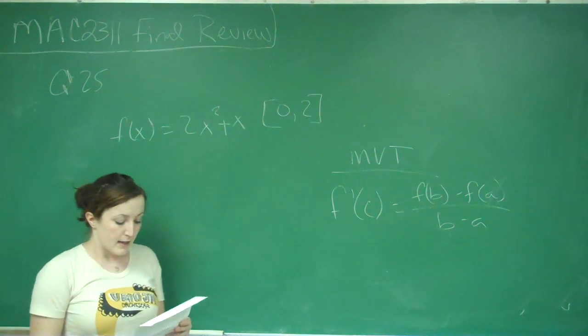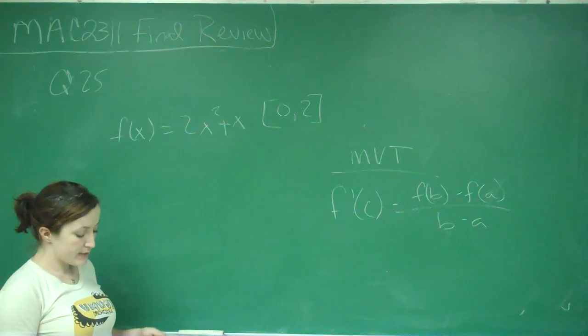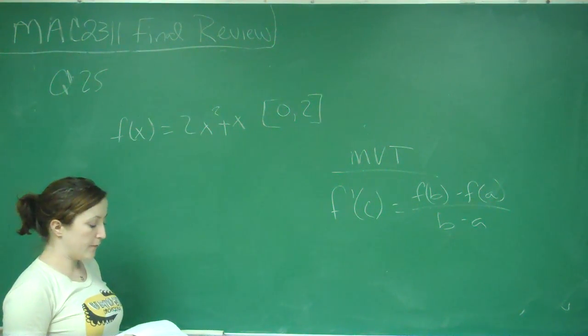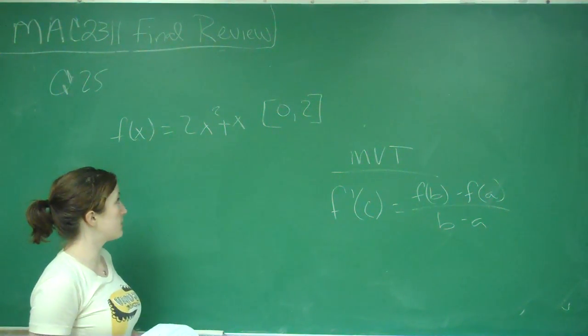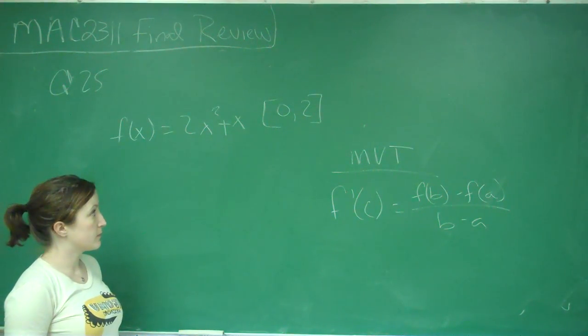So this is the last question, and it says to find the value of C guaranteed by the mean value theorem for f of x equals 2x squared plus x on the interval from 0 to 2.